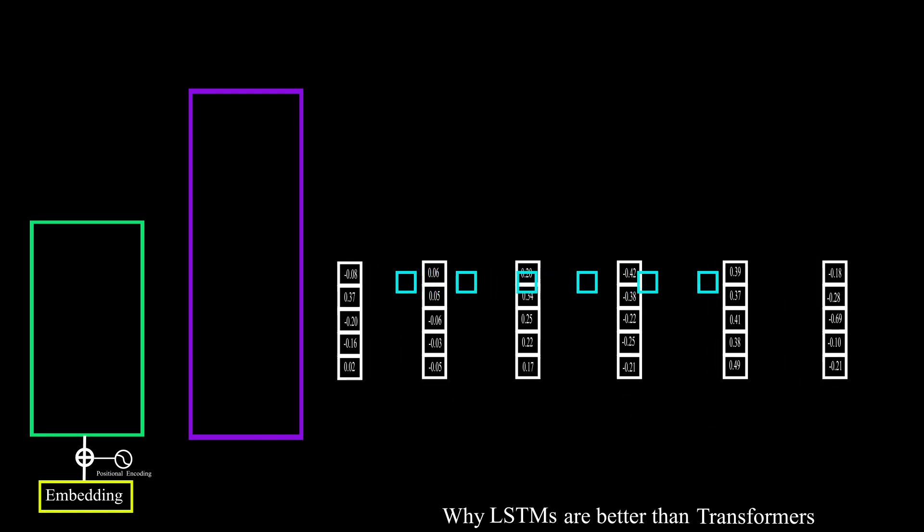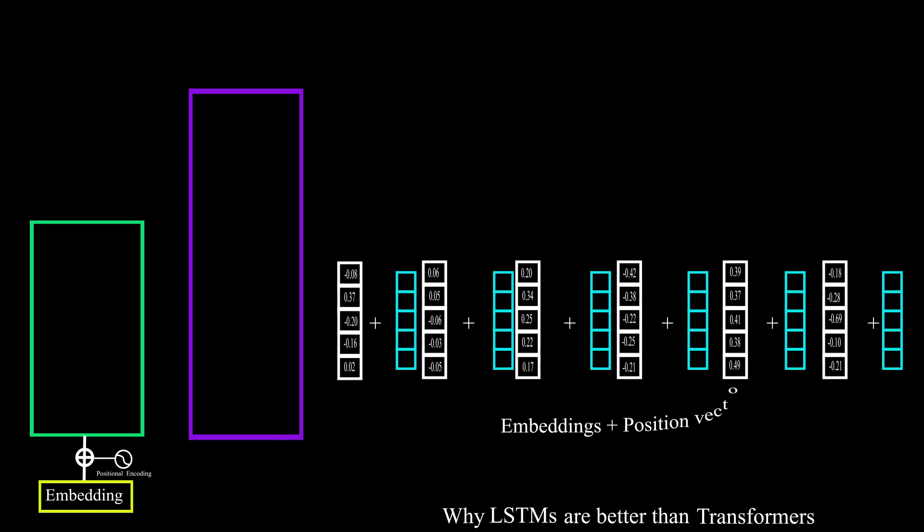And what it does is add position vector into embedding vector which holds the information about position of each word. Let's see how it works.